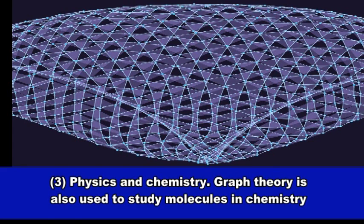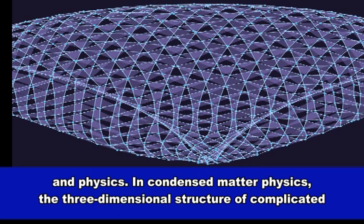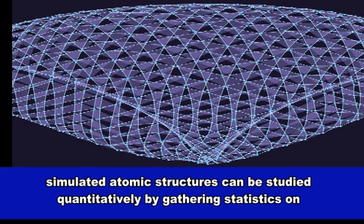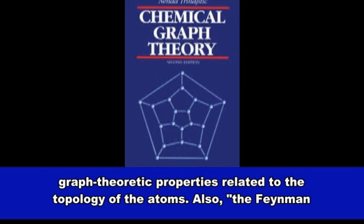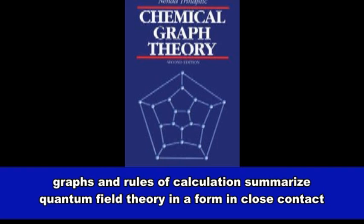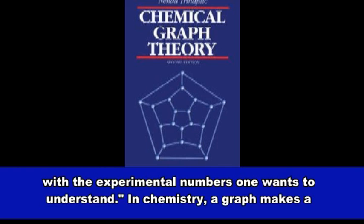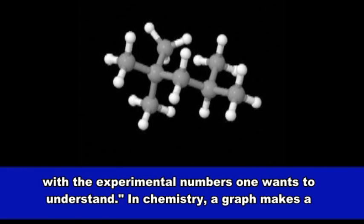Physics and Chemistry: Graph theory is also used to study molecules in chemistry and physics. In condensed matter physics, the three-dimensional structure of complicated simulated atomic structures can be studied quantitatively by gathering statistics on graph-theoretic properties related to the topology of the atoms. Also, the Feynman graphs and rules of calculation summarize quantum field theory in a form in close contact with the experimental numbers one wants to understand.